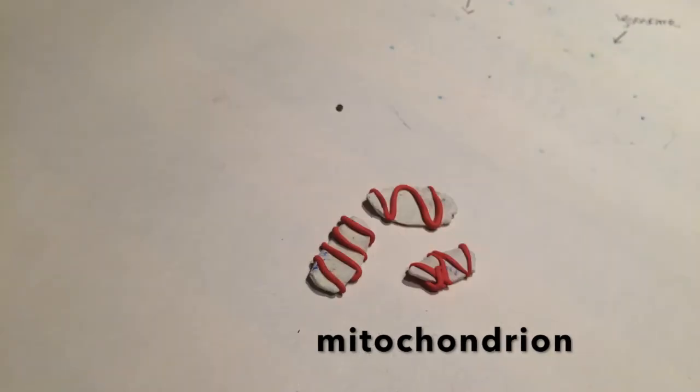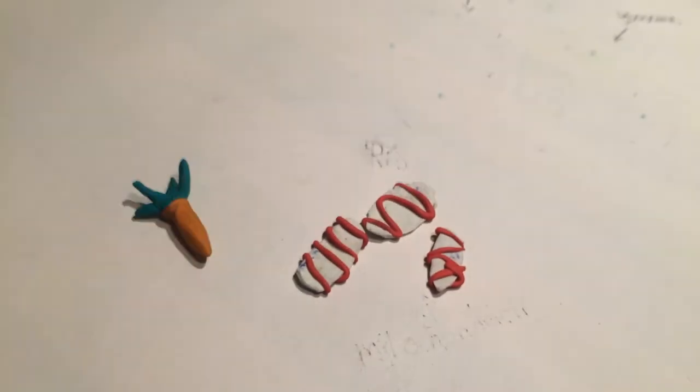Inside it is a nucleolus that produces ribosomes. The vacuole is an organelle that stores waste, food, and fluids. The mitochondria is an organelle that releases energy from food.